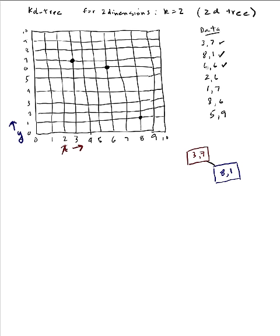Next I want to insert (6,6), located here on the graph. The 6 is greater than 3, so I use the first dimension and go to the right. Then I compare the second 6 against 1, and since it's greater I go right again. Every time I go down a level I toggle color between blue and red. So here's where (6,6) goes — at this level I'm deciding on X, the level above on Y.